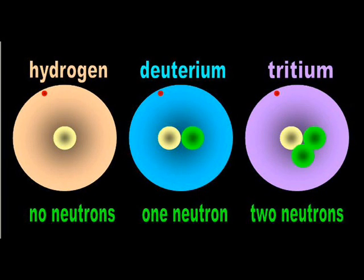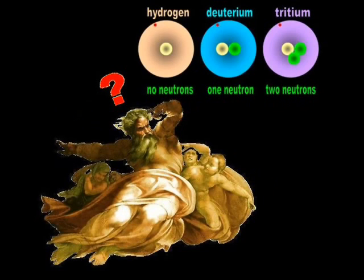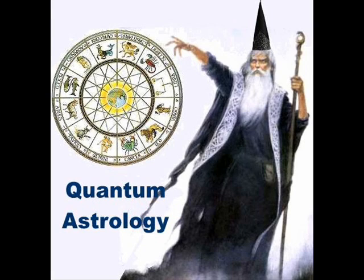If the purpose of neutrons is to keep protons apart, why did God put neutrons in these two hydrogen isotopes? Clearly the quantum mathematician's prediction didn't come true.